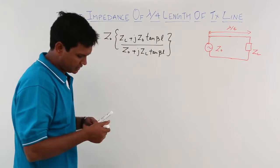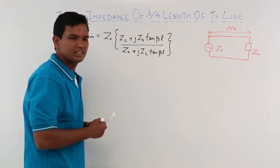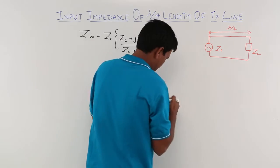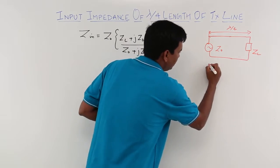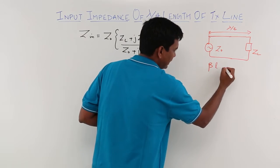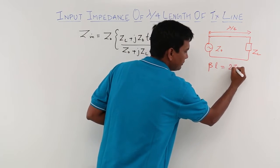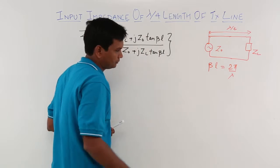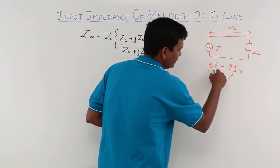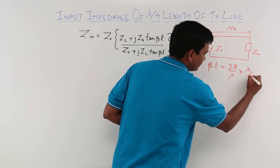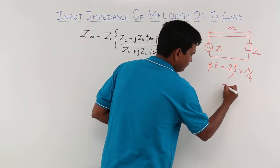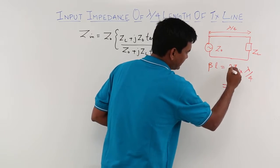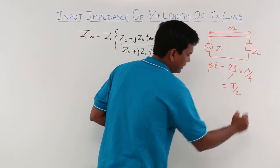The interesting thing to note is what is tan beta l? What is beta l actually? Beta l is nothing but beta times l, where beta is 2 pi by lambda. And what is the length? Length is lambda by 4. Lambda cancels, so this comes out to be pi by 2.